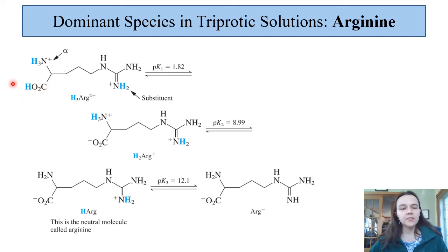This fully protonated form has a pK of 1.82, it will lose this carboxylic acid proton to create H2arg+. Then the next proton that is lost at pK2 of 8.99 is going to be this amine going from NH3+ to NH2. Voila! This is H arg, the neutral molecule. And then finally our second amine can be deprotonated with the pKa of 12.1 to create arg- where we just have the negative charge on the carboxylic acid.